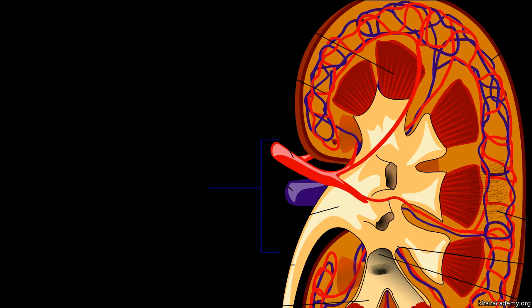What I want to do in this video is talk a little bit about the kidney, and to talk about how it operates at its smallest functional level, and that's the nephron. So we're going to talk about the kidney and the nephron.